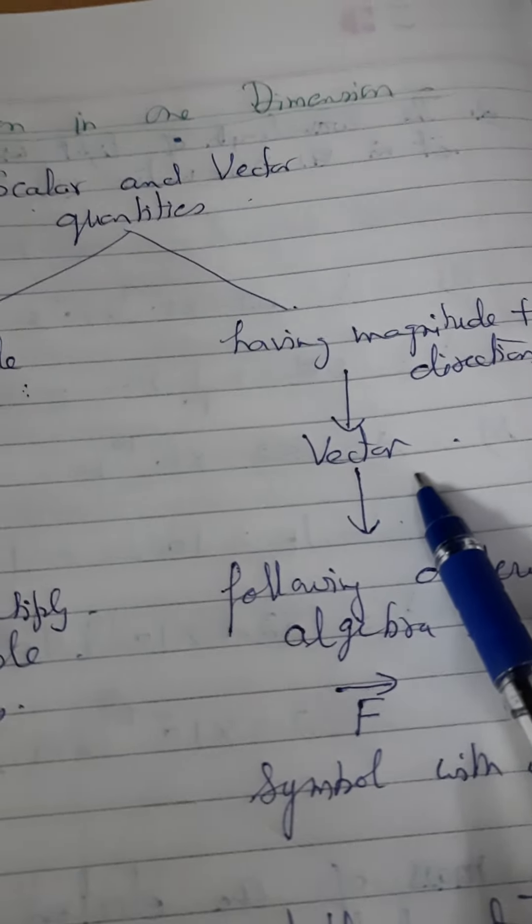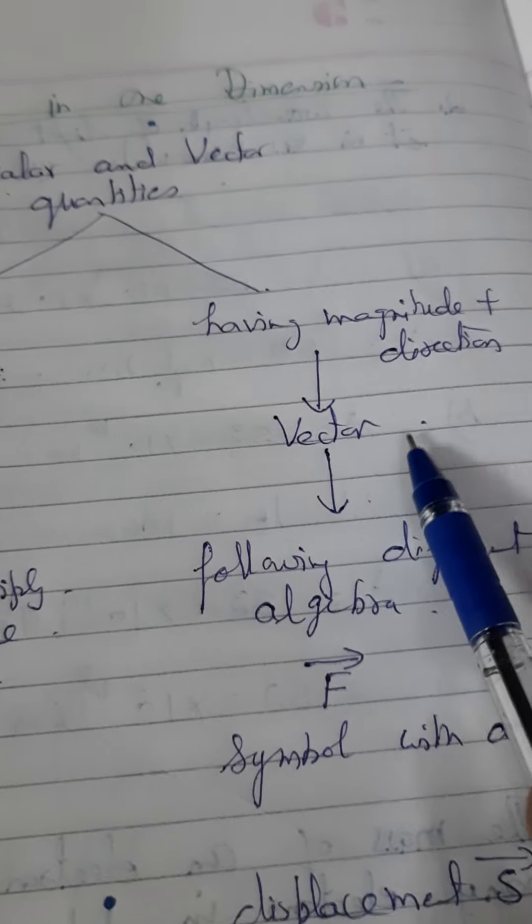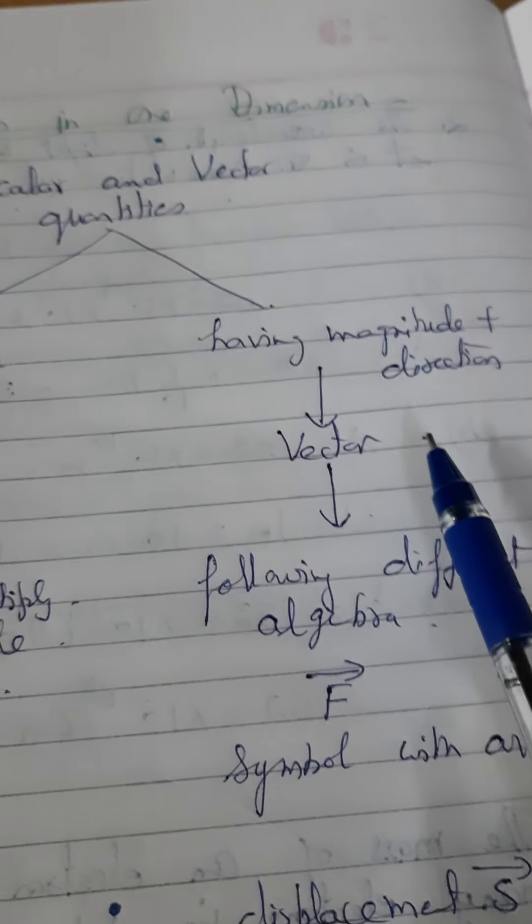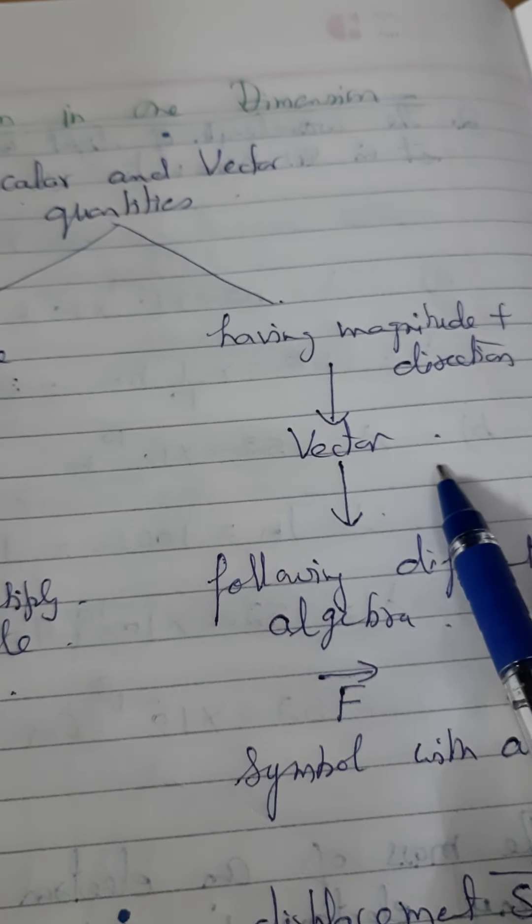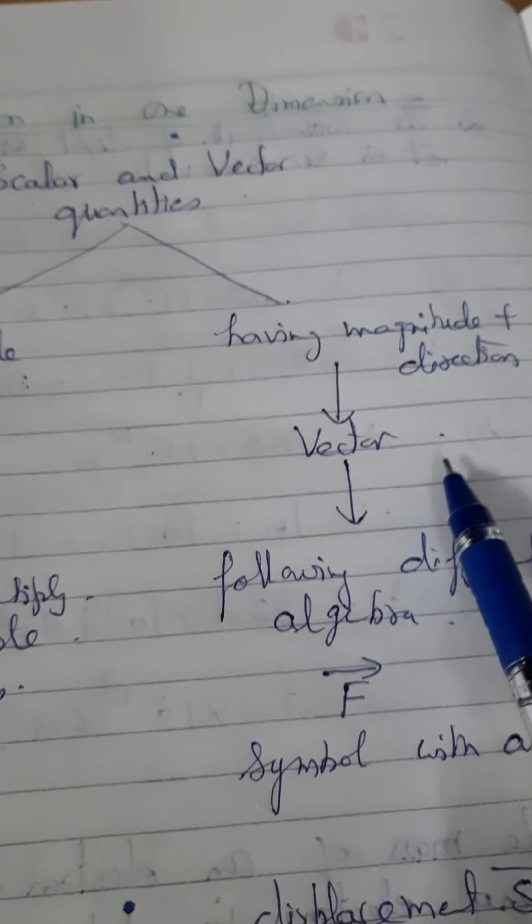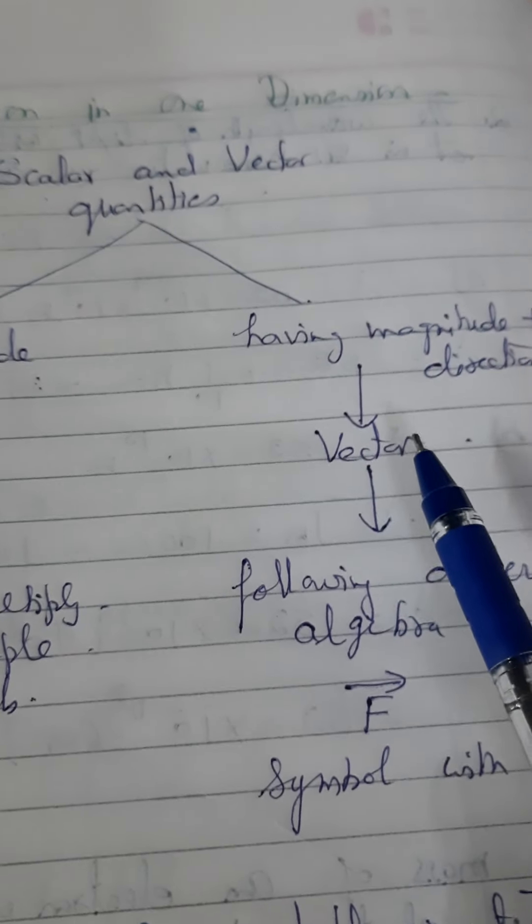And vector quantities are displacement, velocity, acceleration, momentum, force, weight, electric field intensity, dipole moment. These all are the vector quantities.